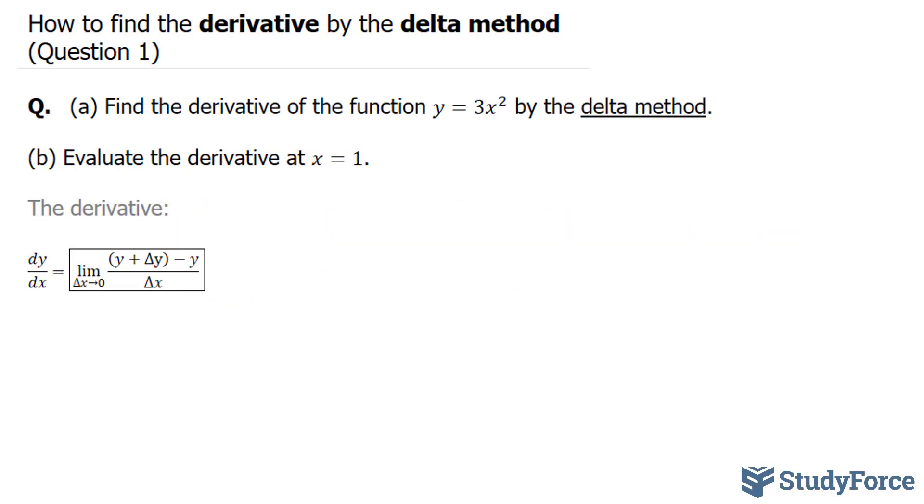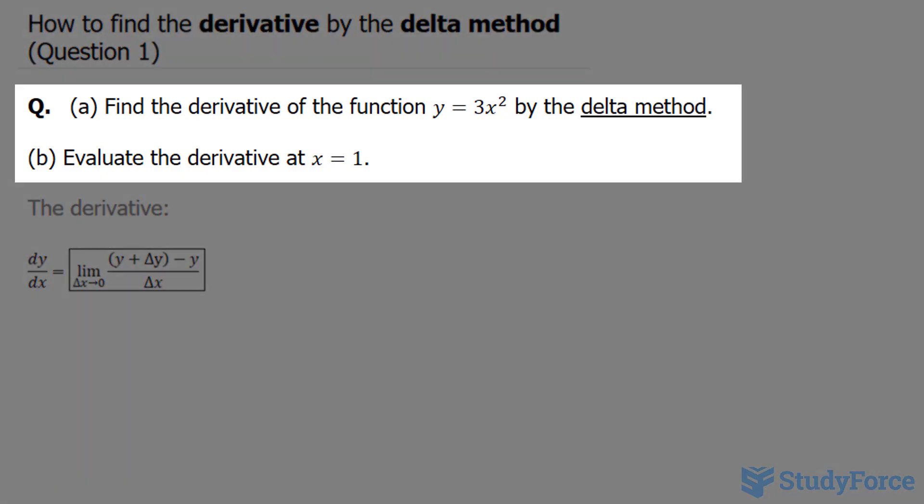In this video, I'll show you how to find the derivative by the delta method. This is question 1. The question reads, find the derivative of the function y equals 3x squared by the delta method.